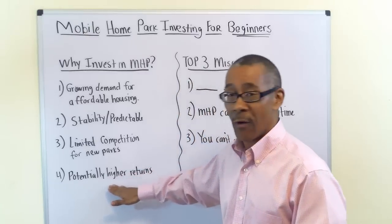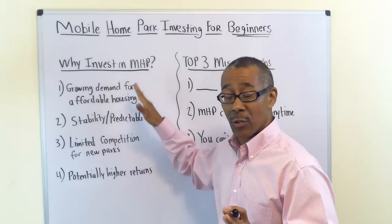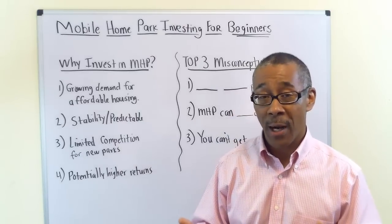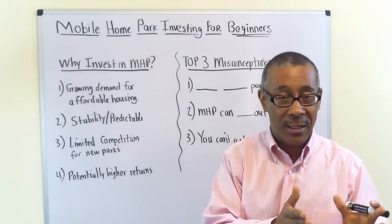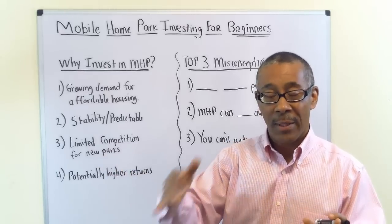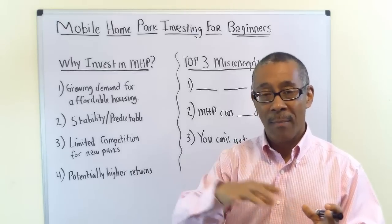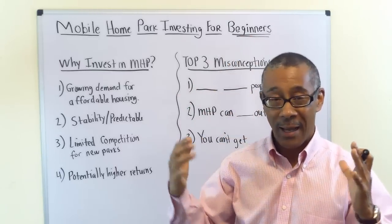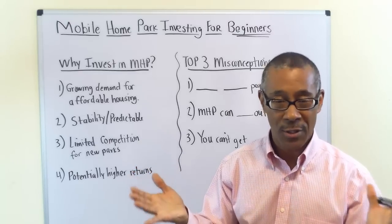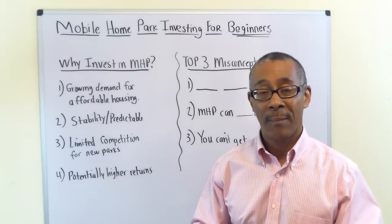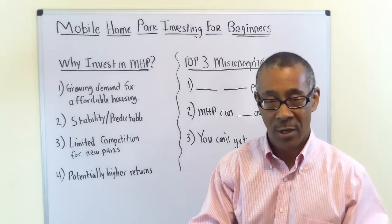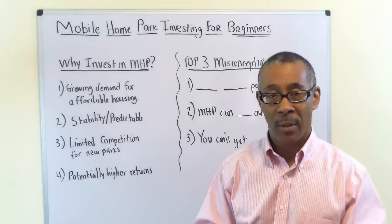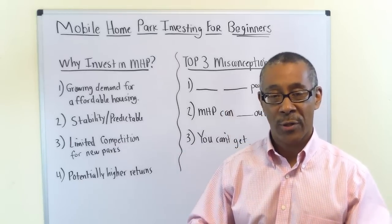Number four: there's a potential for higher returns. The reason is if you buy the mobile home park correctly — owning just the land and leasing out the lots, taking care of the road, amenities, and utilities, but not the homes — your operating expenses are much lower percentage-wise compared to an apartment building. With an apartment building you own the land, the building, the insides and outsides, roofs, stoves, refrigerators, kitchens, bathrooms — everything. In a mobile home park, you only take care of the dirt, thereby increasing your cash-on-cash return and return on investment.